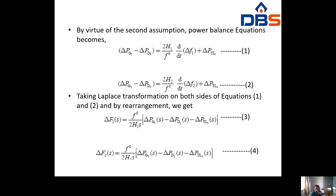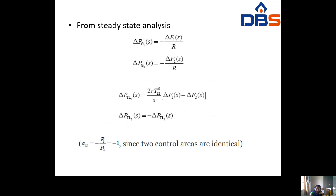Similarly, delta PG2 minus delta PD2 equals 2H2/F0 times d/dt of delta F2 plus delta PTL2 (equation 2). Taking the Laplace transform of equations 1 and 2: delta F1(s) equals (F0/2H1s) times [delta PG1(s) minus delta PD1(s) minus delta PTL1(s)] (equation 3), and delta F2(s) equals (F0/2H2s) times [delta PG2(s) minus delta PD2(s) minus delta PTL1(s)] (equation 4). From steady-state analysis, delta PG1(s) equals minus delta F1(s)/R and delta PG2(s) equals minus delta F2(s)/R.